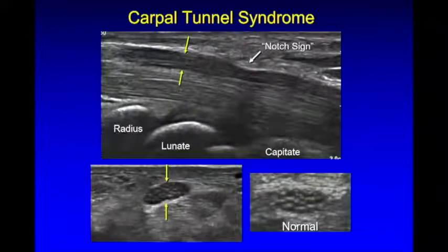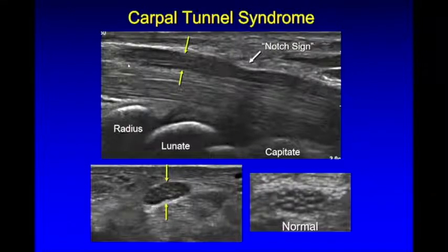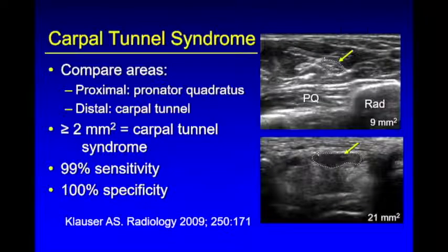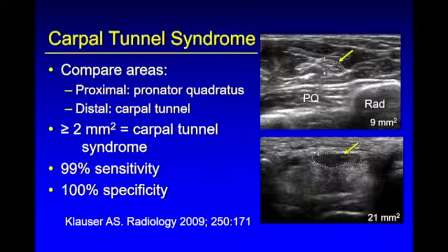Here you can see the normal nerve — this image is blown up to show the echogenic connective tissue. Here is an abnormal nerve: it is more hypoechoic because the echogenic connective tissue is less echogenic. In long axis, we can see the enlarged hypoechoic nerve being compressed under the retinaculum. This has been termed the notch sign, where there's a transition from an enlarged nerve to a smaller diameter nerve due to compression. The most accurate approach is comparing the area proximal to distal.